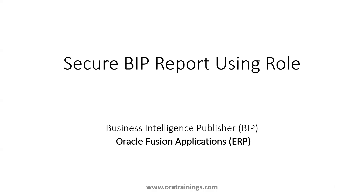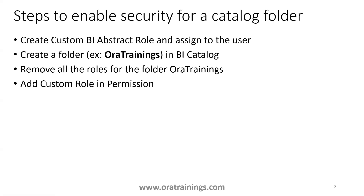Hello, welcome to orotrainings.com. In this session we'll discuss how to secure a BI report using a custom role. The requirement is to enable access to a report for a user based on a role. The first step is to create a custom BI abstract role and assign it to the user. Next, we create a custom folder called 'Aura Trainings' in the BI catalog, and by default we'll remove all existing permissions and assign the custom role.